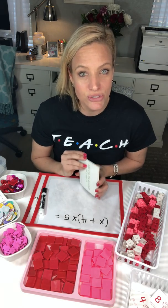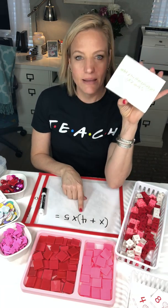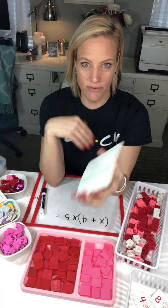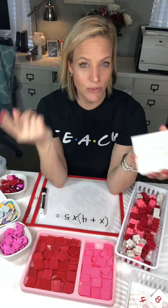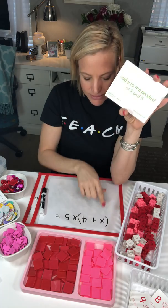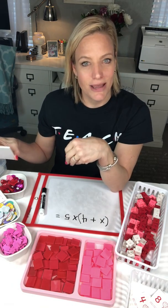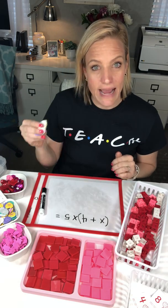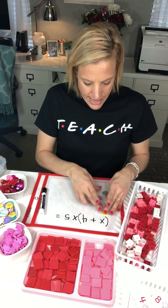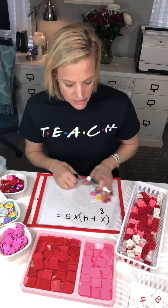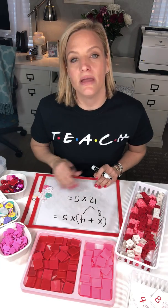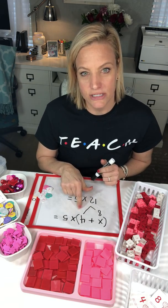For students who need an extra challenge, I write out an algebraic expression and they write the scenario in words — reverse thinking where they decide: should I use the word product, quotient, or something else? Everyone also solves by substituting their variable. For example, if a student grabbed eight manipulatives, their variable is eight: eight plus four is twelve, twelve times five equals sixty — so they're actually working out the expression, not just writing it.